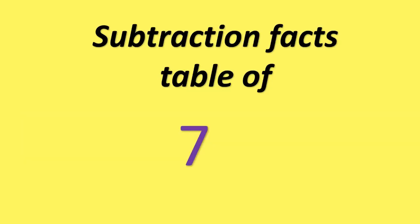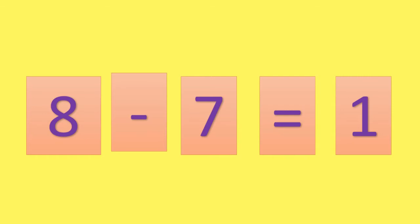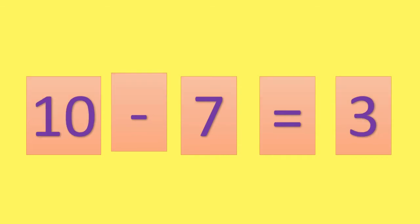Let's learn the Subtraction Facts Table of 7. 7 minus 7 is equal to 0. 8 minus 7 is equal to 1. 10 minus 7 is equal to 3.